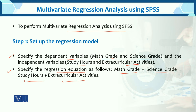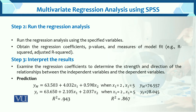First, we set up the regression model. Second step is to run the regression analysis using the specified variables — independent and dependent. Then we obtain regression coefficients, p-values, and model fit measures such as R-squared and adjusted R-squared. Finally, in step 3, we interpret. In this particular example, we do model fitting, not hypothesis testing.